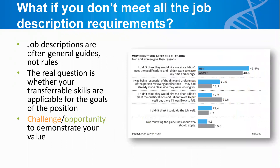A Harvard Business Review study looked at the reasons people don't apply for positions, and not meeting all the qualifications is one of the most cited. A Hewlett Packard internal report quoted in Lean In and The Confidence Code found that women will only apply for a job when they meet 100% of the listed qualifications, but men are comfortable applying when they meet only 60% of them. There are of course jobs where some requirements are non-negotiable, but often job descriptions can be seen as general guides, not hard and fast rules. Even if you don't think you meet all the listed requirements, you may have additional skills that will make you even more relevant — demonstrating transferable skills that will help fulfill the goals of the position.